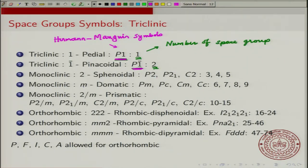Then you can have the monoclinic domatic class, where you have to have a mirror. You could have primitive with a mirror, primitive with a C-glide plane, C-centered with a mirror, or C-centered with a glide plane. These are given the numbers 6, 7, 8, and 9.